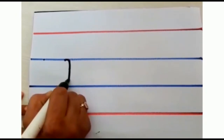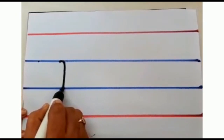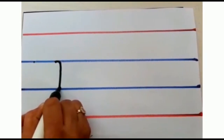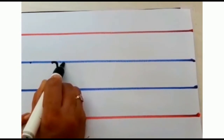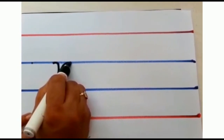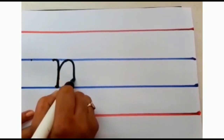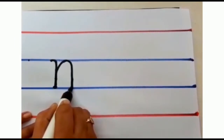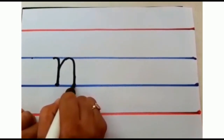Touch the third blue line. Again go up on the same line. Touch the second blue line, make a curve, come down again children. Touch the third blue line.